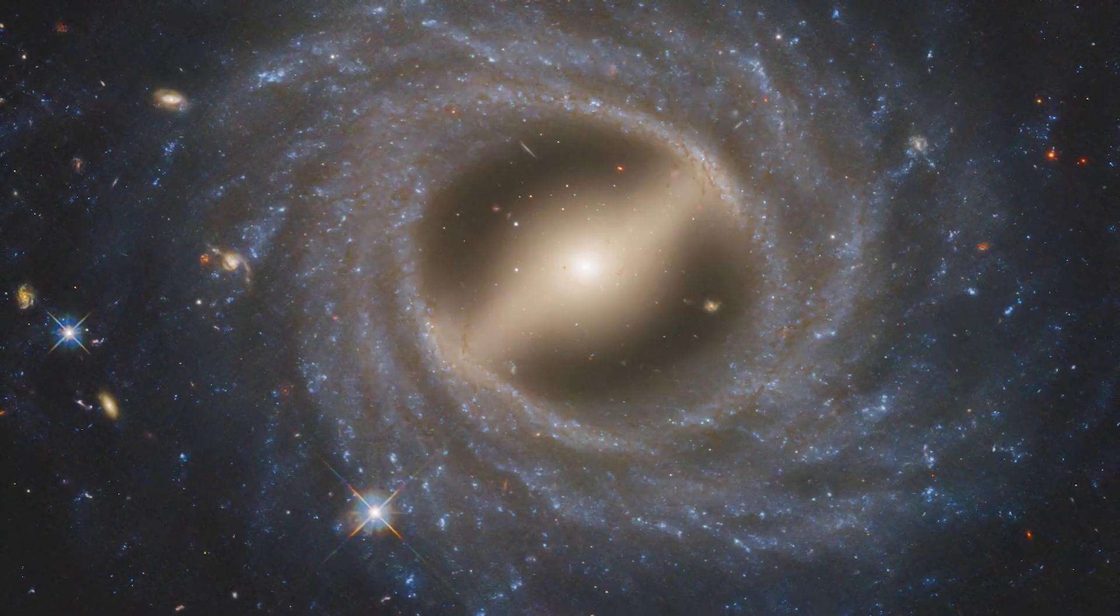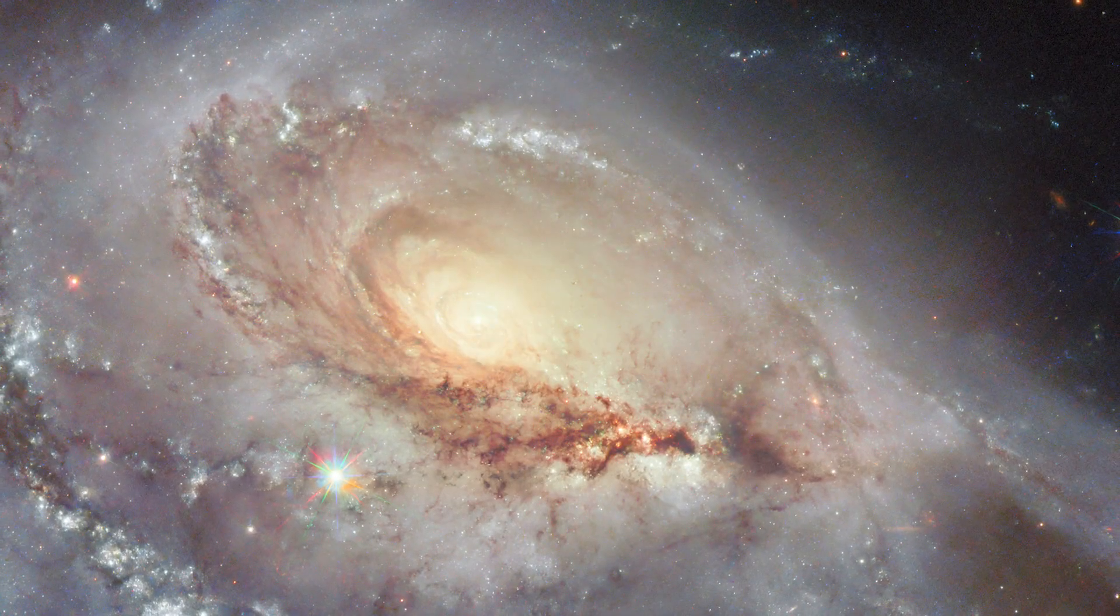Along with these cosmic heavyweights, galaxies also contain countless smaller black holes. These form when massive stars reach the end of their lives and usually have a mass of less than a hundred times that of the Sun.